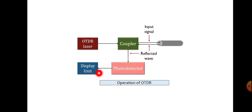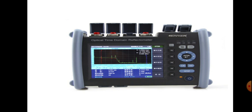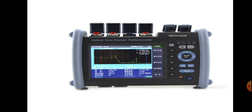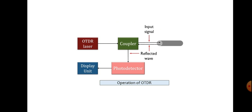The reflected signal will be displayed by the display unit. In some block diagrams, a log amplifier is shown here because basically the signal level is very low, and in order to amplify it we use a log amplifier. The OTDR display will show the logarithmic value of output power in decibels — that is why a log amplifier is used.